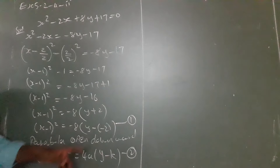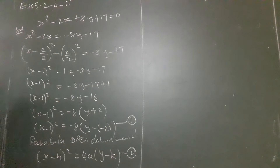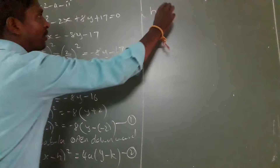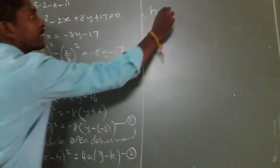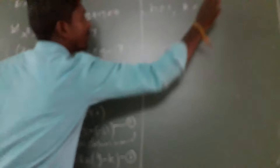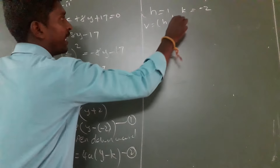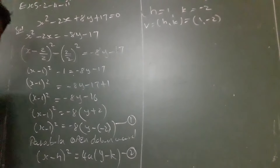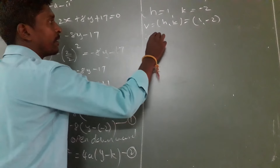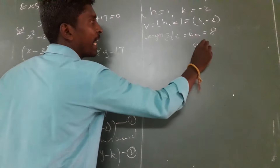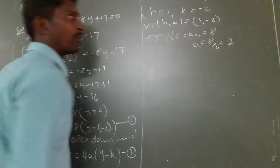Now compare equation 1 and equation 2 to find the values of h and k. From the comparison, h equals 1 and k equals minus 2. So the vertex equals (h, k), which gives vertex equal to (1, minus 2). We also compare to find 4a, the length of the latus rectum. Length of latus rectum equals 4a, which equals 8. Therefore a equals 8 divided by 4, which equals 2.